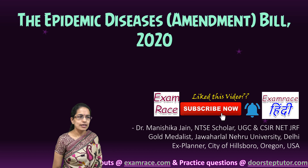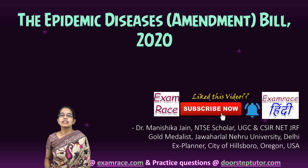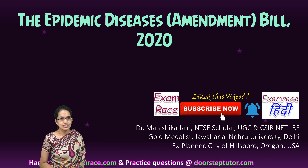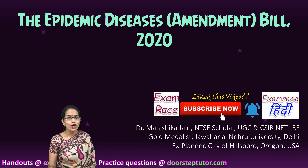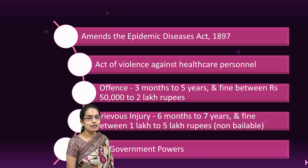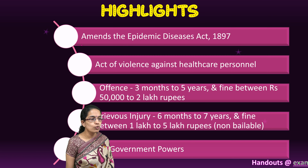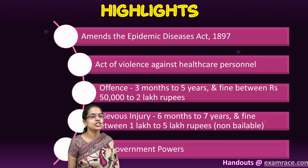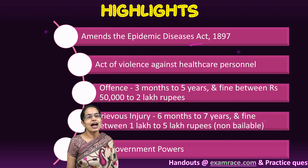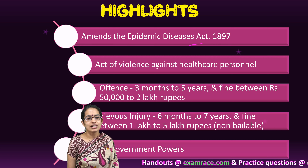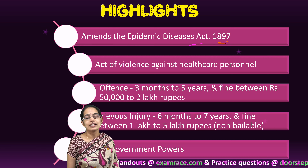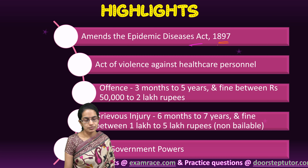Let's talk about the Epidemic Disease Bill. The Epidemic Disease Bill would basically bring an amendment to the most ancient Epidemic Disease Act, which was enacted in the year 1897 during the British time.